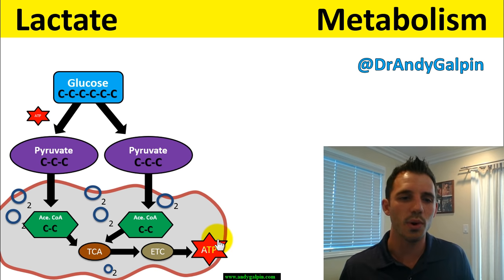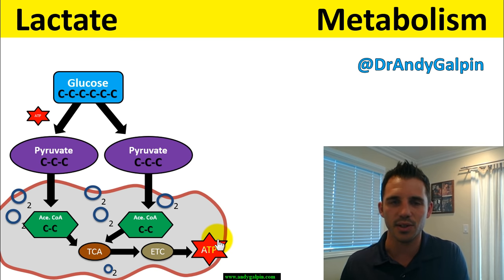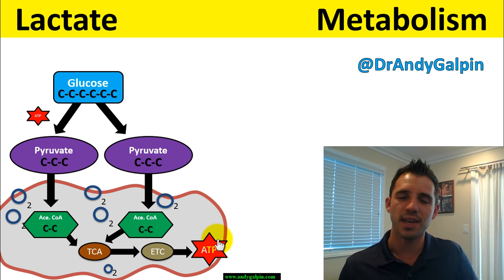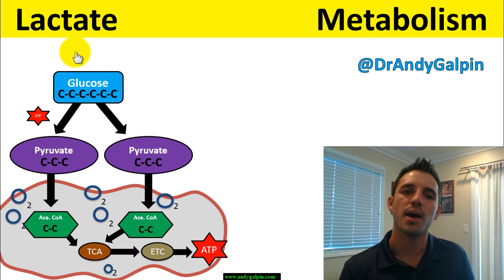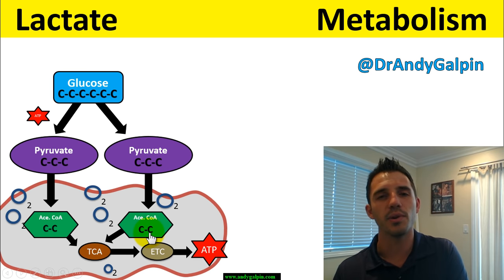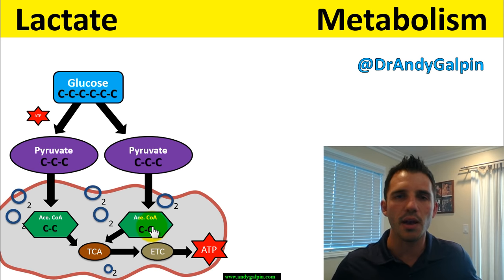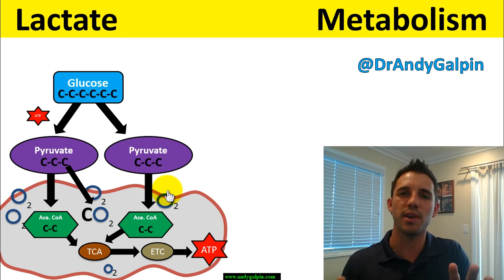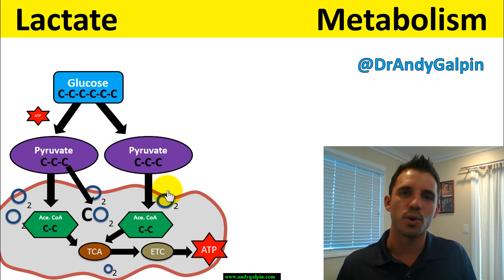The reason O₂ is so important here is because of what's happening with the carbons. Glucose is a six-carbon chain. It gets split into two three-carbon pyruvates. Each pyruvate gets converted into acetyl-CoA, but acetyl-CoA only has two carbons. So we have to understand what happened to those carbons — because this explains everything about what lactate is and why we create it. Your body, speaking loosely here, is not going to give up a carbon unless it has somewhere better for it to go.